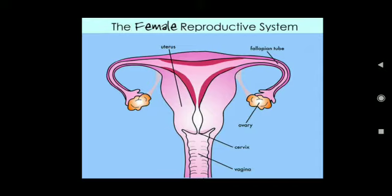The ovary releases an egg or ovum. The egg or ovum is the female germ cell or female gamete. The hormones estrogen and progesterone are responsible for the release of the egg from the ovary.